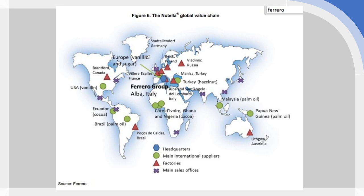There is a huge globalized supply chain behind something like Nutella: hazelnuts from Turkey, palm oil from Papua New Guinea, cocoa from the Ivory Coast, Ghana, Nigeria, cocoa from Ecuador, vanilla from the US — a huge range of different global suppliers, different manufacturing centers spread out across different continents, and then a huge complex logistics network to move the actual part-finished and fully finished product around the world today.